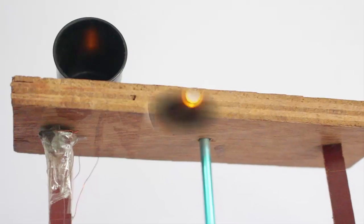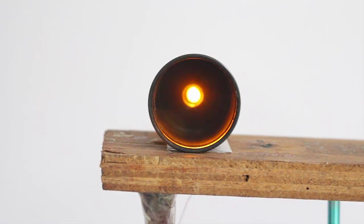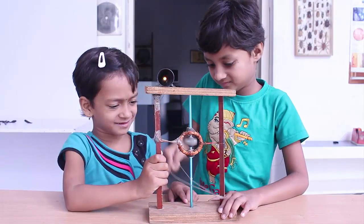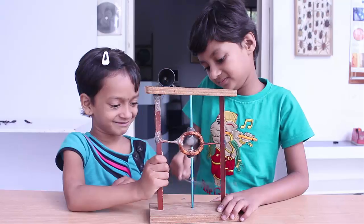Here you can see the knitting needle moving inside the wooden frame. This simple model depicts the working of an electrical generator. You can see the knitting needle moving inside the coil.